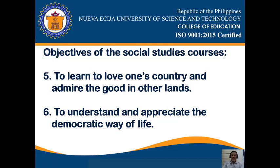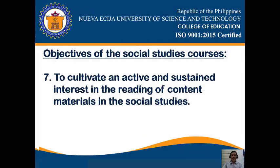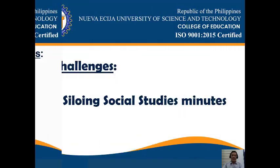Number five is to learn to love one's country and admire the good in other lands. Number six is to understand and appreciate the democratic way of life. And number seven is to cultivate an active and sustained interest in the reading of content materials in the teaching of social studies.